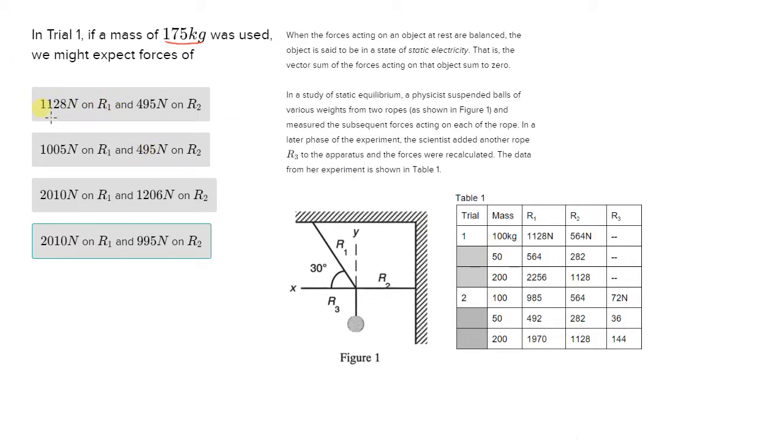And so as we look at answer choice A, and we look at 1,128 Newtons for R1, we see that actually is exactly the same force that we see on R1 for 100 kilograms, which we would not expect because the forces should be increasing as you increase the mass of the object. So we know that answer is not right. And we could just stop right there because they both have to be right. But we should keep going, we should be thorough. And we see here that they give us the choice of 495 Newtons, which is less than the force in R2 at 100 kilograms. That's also wrong because we know it needs to be higher than 564 Newtons to be the right answer.